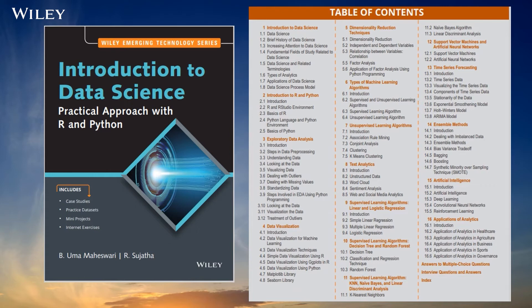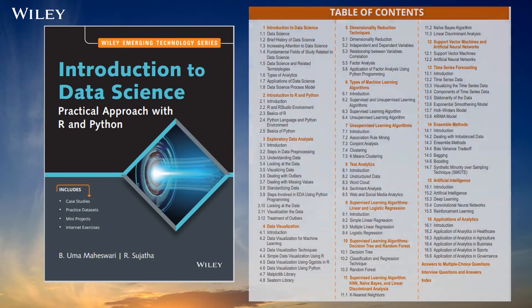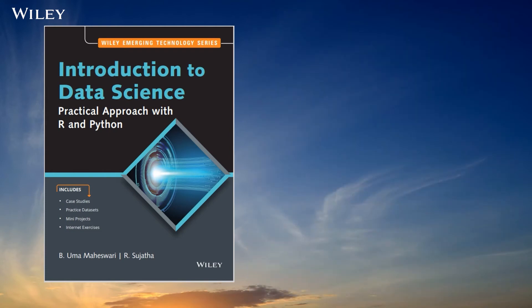Chapter 13 discusses exponential smoothing, Holt-Winters, and ARIMA model building for analyzing time series data. Chapter 14 covers ensemble methods such as bagging, boosting, and smart techniques to deal with unbalanced datasets. Chapter 15 explains the advanced concepts of artificial intelligence and deep learning. Chapter 16 is dedicated to the application of analytics in various domains such as healthcare, sports, business, and agriculture.